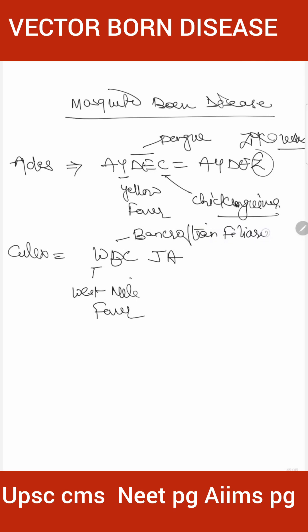Remember Bancroftian. C means Culex. J means Japanese encephalitis and viral arthritis. Many times questions ask: Japanese encephalitis transmitted by? Answer is Culex.